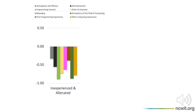The first group on the left-hand side, we call them the inexperienced and the alienated. They tend to report little previous experience with and interest in programming and other computing activities. On average, they have a fairly low sense of belonging in computing. They also report fewer positive beliefs about the field and have a low expectation of success in the present course.